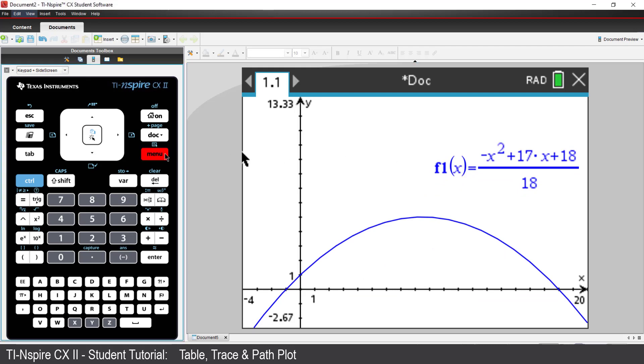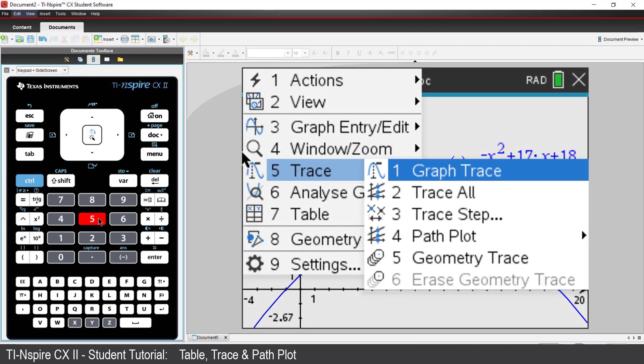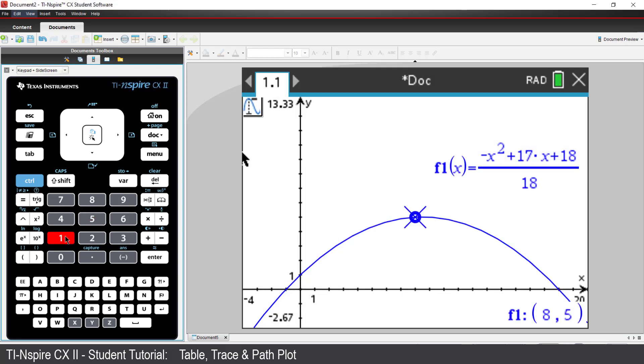I'll use the Trace option again. This time we see key features of the graph appearing automatically. We can see the y-intercept, the maximum, and of course the x-axis intercept or zero.